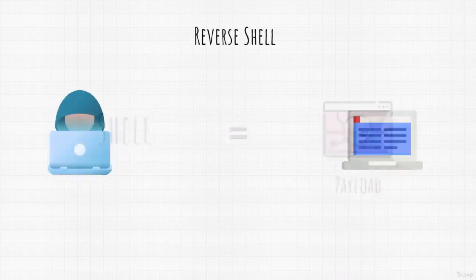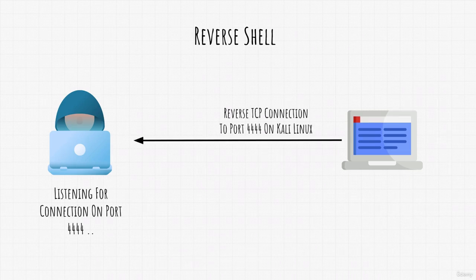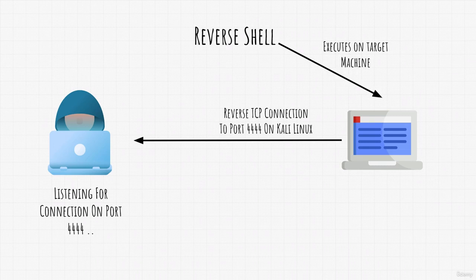Reverse shells are something that you will use a lot. It works on the principle of the target machine trying to connect back to our Kali Linux machine. For this to work, on our Kali Linux machine we must first listen for the incoming connection over some port. Then we exploit the target and drop a shell which will tell that target machine to connect to our port on Kali Linux that we're listening on. After it completes the connection, we can then control that machine.